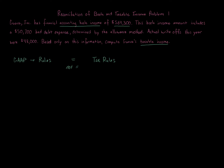An example of a permanent difference is municipal bond interest. All interest income is included in financial accounting income once earned under the accrual method, or received under the cash method. But under tax, specific municipal bond interest is excluded from gross income and will never be included. There are other examples too, like life insurance proceeds received upon death. The general rule is they're the same, but special rules say they're different — that's a permanent difference.